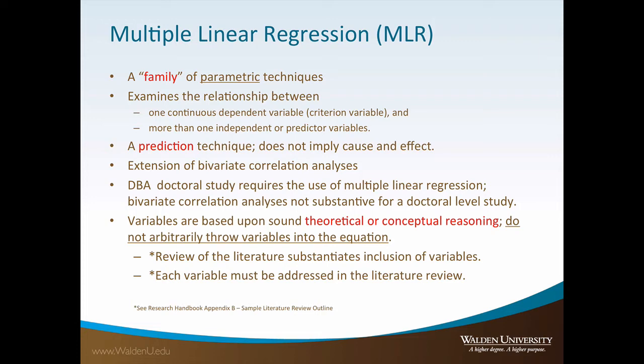Multiple linear regression is a family of parametric techniques used to examine the relationship between one continuous dependent variable, also known as the criterion variable, and more than one independent or predictor variables. Regression is a prediction technique, meaning multiple linear regression does not imply cause and effect. Multiple regression is a logical extension of bivariate correlation analyses, which examine the relationship between two continuous variables.